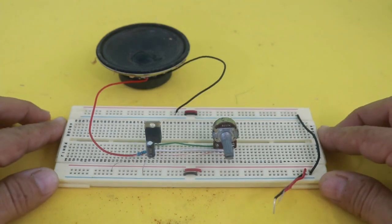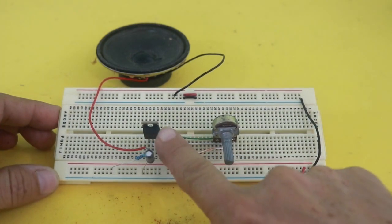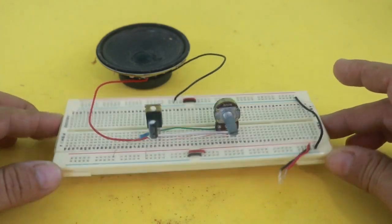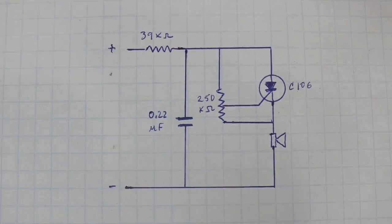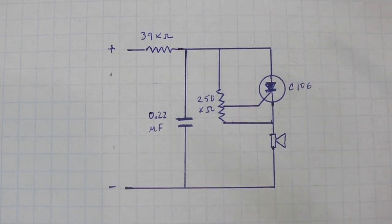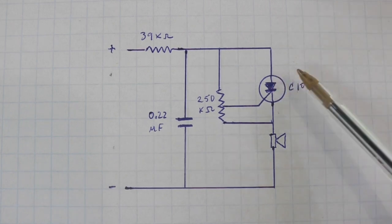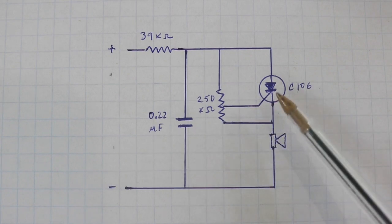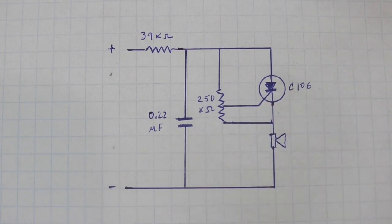This one in particular is based on a tyristor or silicon control rectifier. Here you can see the circuit. The tyristor is like a switch. It is open normally and it closes when you apply a certain voltage to the gate. So the circuit works in the following way.